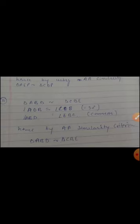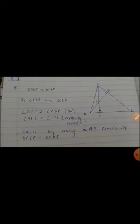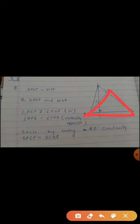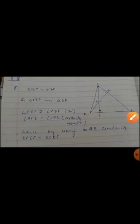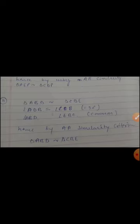Next, triangle ABD is similar to triangle CBE. In triangle ABD, angle ADB is equal to 90 degrees, and angle CEB is equal to 90 degrees. So angle ADB is equal to angle CEB. And angle ABD is equal to angle EBC because it is common. Since again by the Angle-Angle similarity criteria, triangle ABD is similar to triangle CBE.